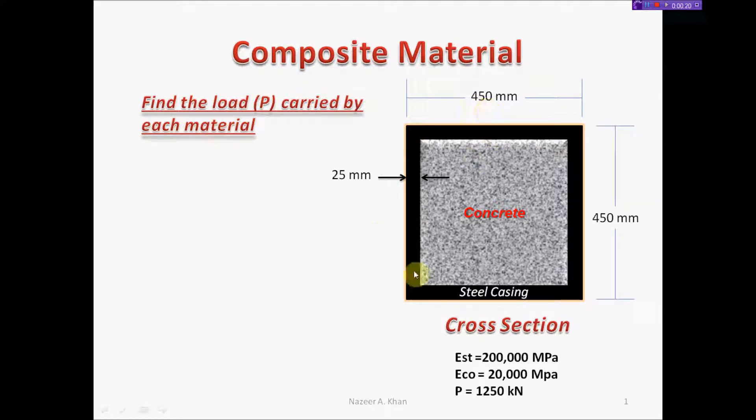We're looking at this composite member made of a steel casing and concrete fill on the inside. The dimensions are 450 by 450 millimeters, so it's a square, with a steel wall thickness of 25 millimeters all the way around.